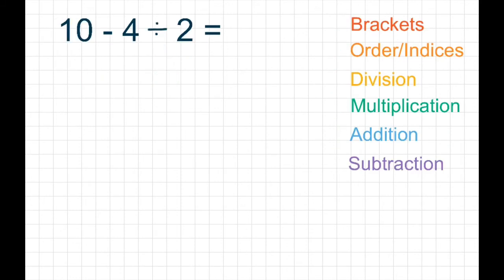Okay, example number 3. In this example, we don't have any brackets. So we're going to miss that step out. We don't have any orders or indices, so we miss that step out. We do have division though, so we need to do that bit first. So we do 4 divided by 2 first of all. 4 divided by 2 gives us 2. So our sum becomes 10 take away 2.